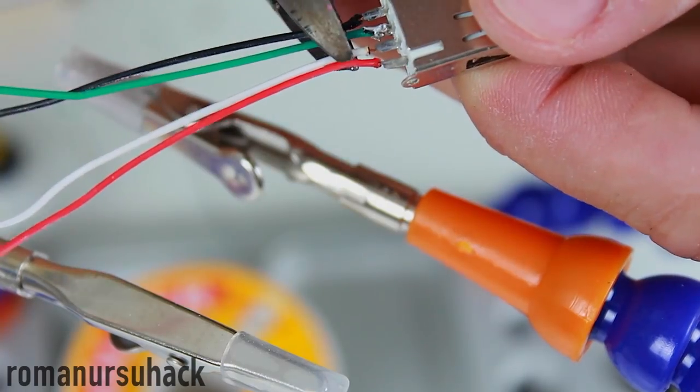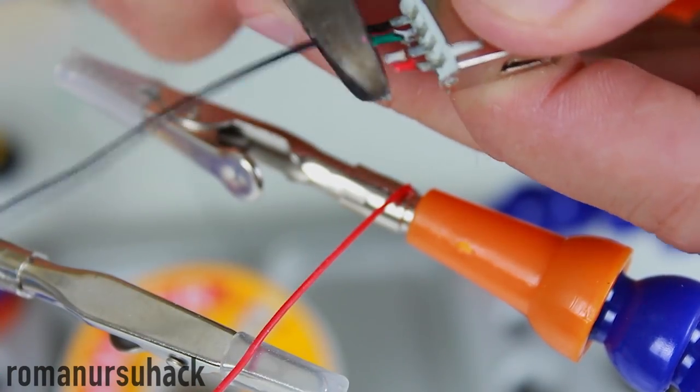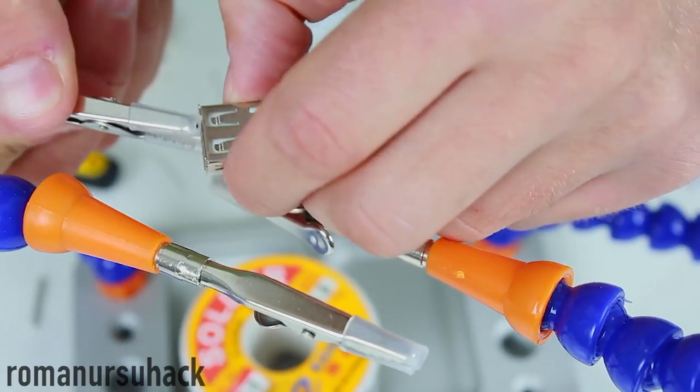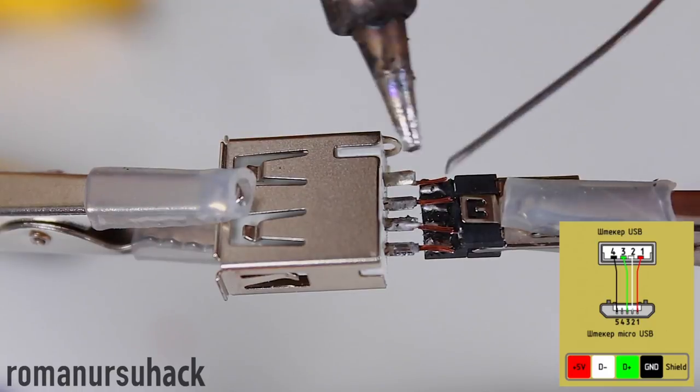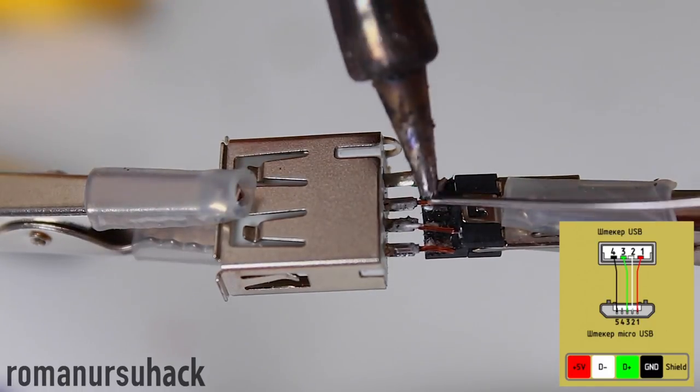Cut off the excess wires, leaving only small pieces. Now let us solder the big plug to the micro USB plug. The red wire is a positive, the white wire is a negative, green one is a plus and the black one is a minus.